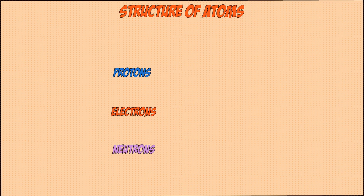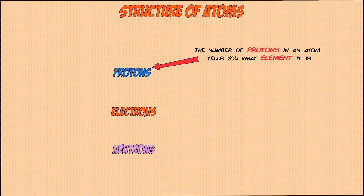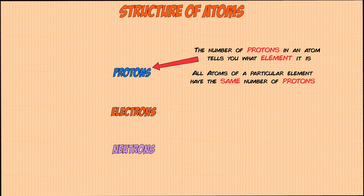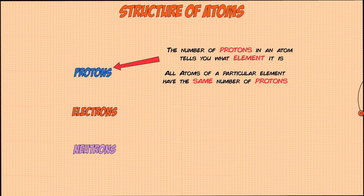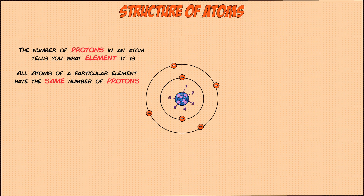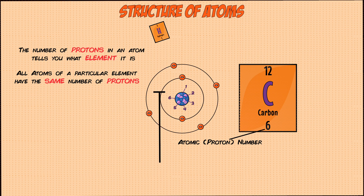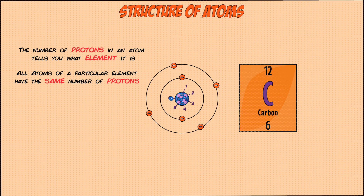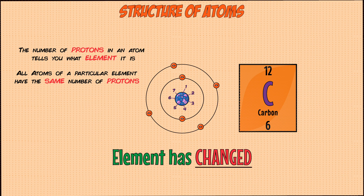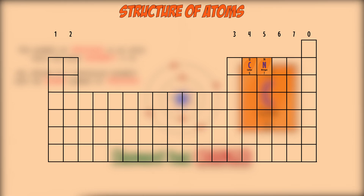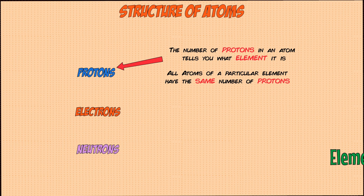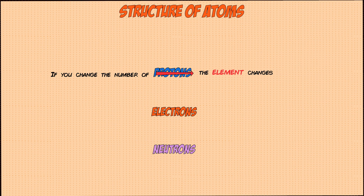Out of these three subatomic particles, it's the number of protons that tell you what element an atom belongs to. That's because all atoms of a particular element have the same number of protons. For example, any atom with six protons in it is a carbon atom, because the element carbon has an atomic number of six — something you can find by looking at the periodic table. If you were to add a proton to a carbon atom, the atom will no longer be carbon, and its element will change to whatever element has an atomic number of seven, which is nitrogen. Simply put, changing the number of protons in an atom changes its element.